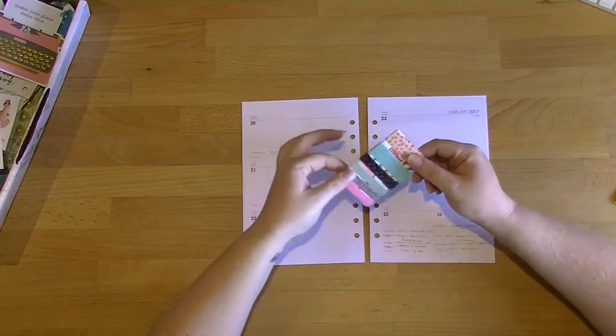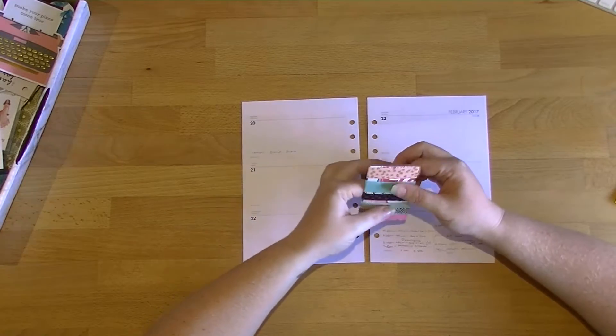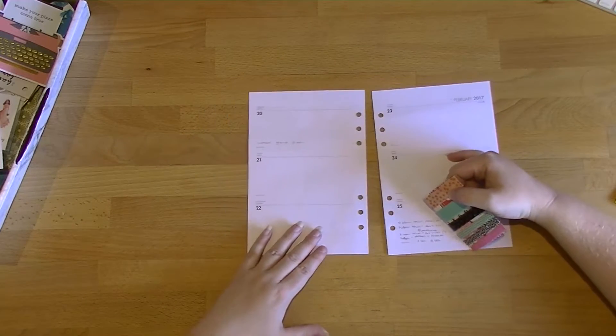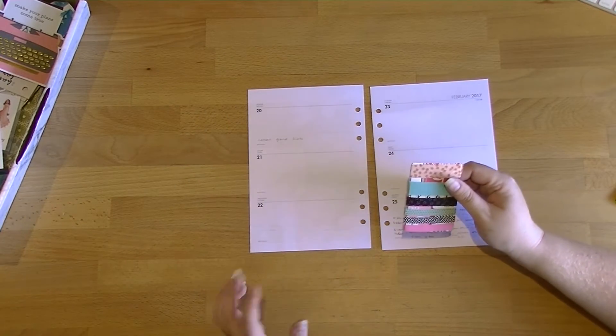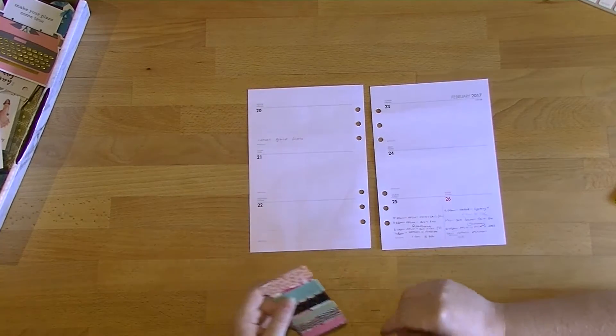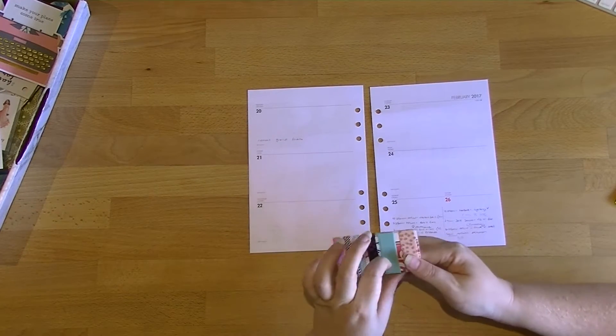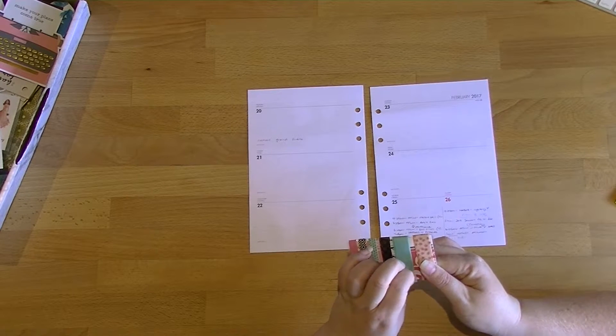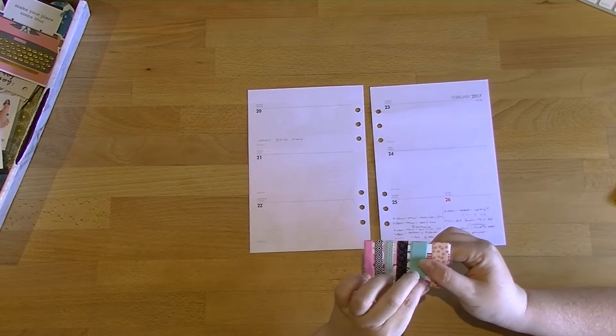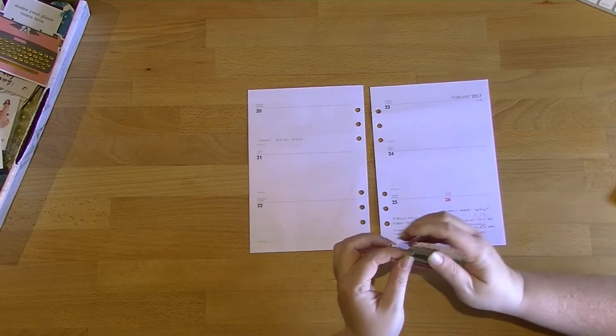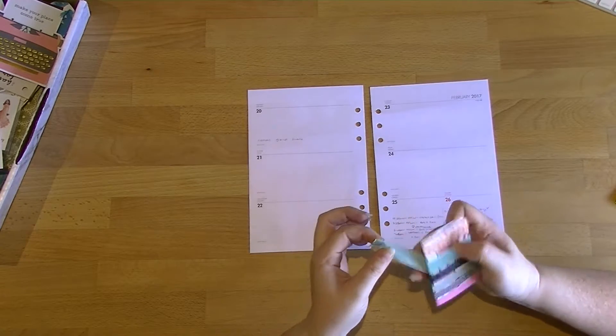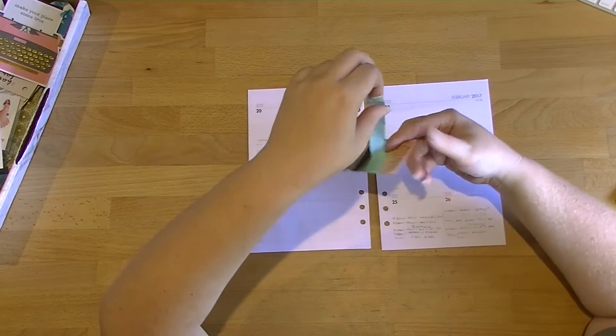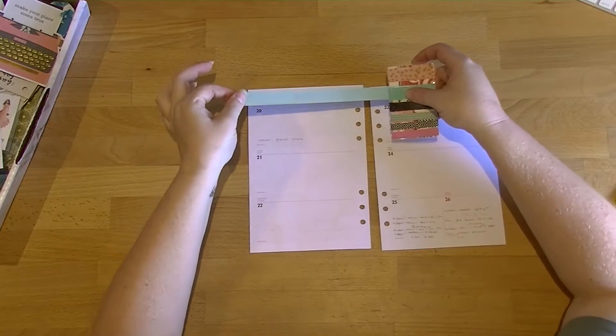What I'm going to start off with is the washi tape. I think I want to do horizontal again. I might use a couple of different types. I'm going to start with this beautiful blue at the top. Because it is a little bit thicker, it's actually going to cover the top nicely. This is a glossy type of washi tape.